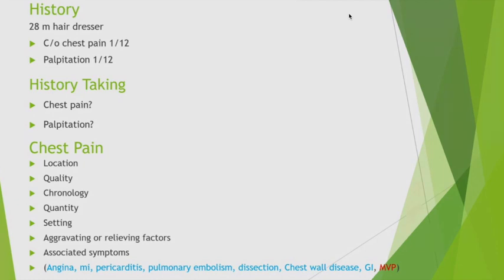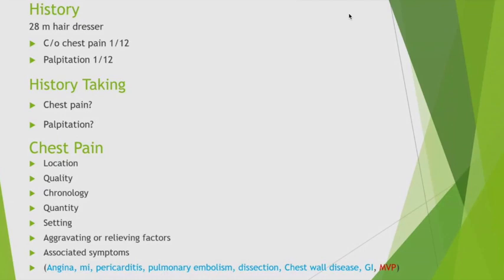Myocardial pain is retrosternal. Pleuritic pain is localized to the sides, not central. Regarding quality of pain: constricting or heavy type suggests cardiac causes. Splitting type — unbearable — is characteristic of aortic dissection.